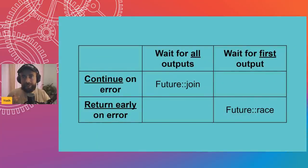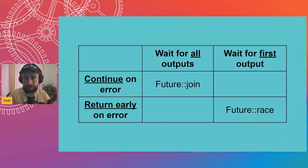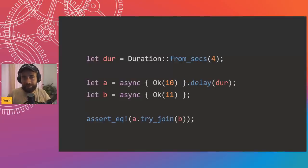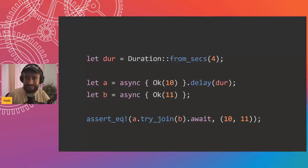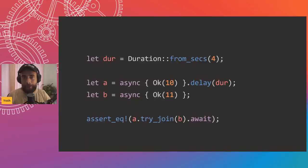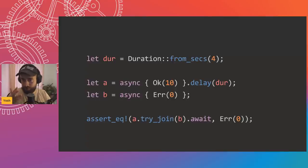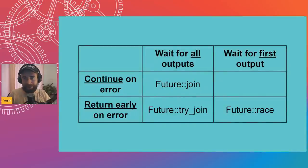Future race fits in as 'wait for first output, return early on error' — it's not aware of what Result does, so if the first value is an error, it returns that error. Then we have try_join, available in async-std: a.try_join(b) — if both are Ok you get back both values, but if one errors, it short-circuits and resolves to the error, dropping all other futures.